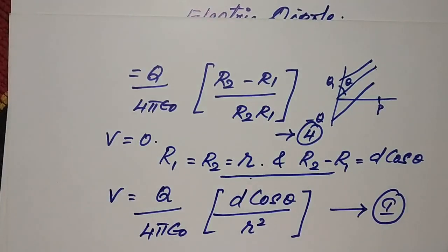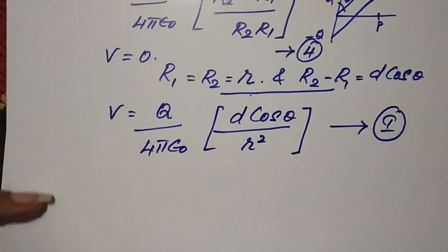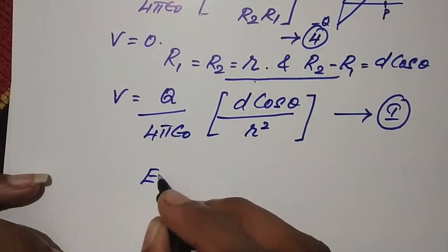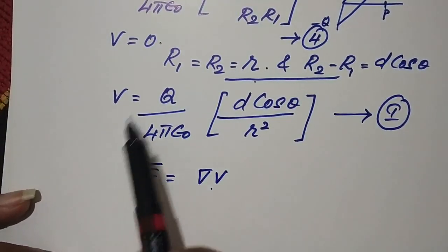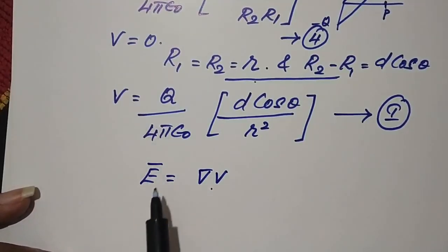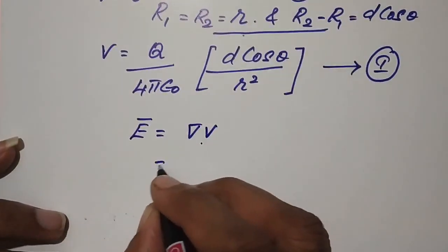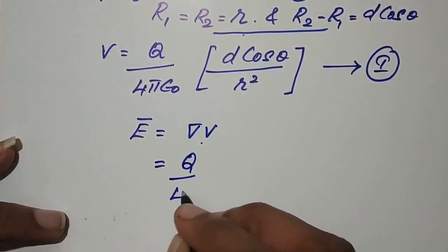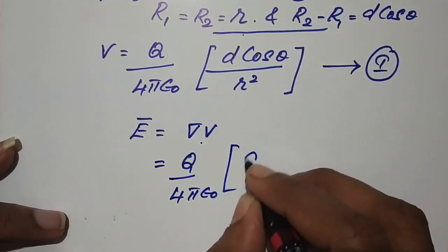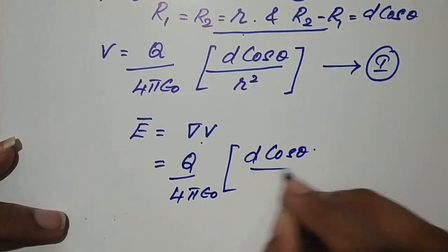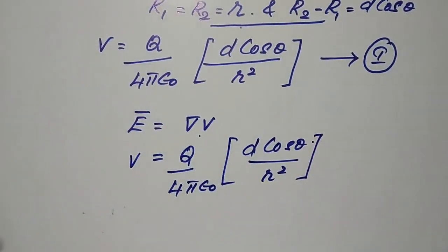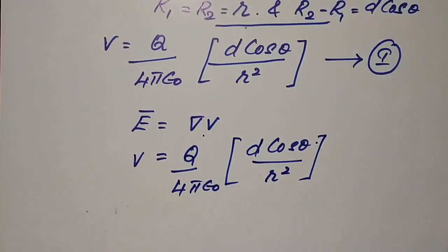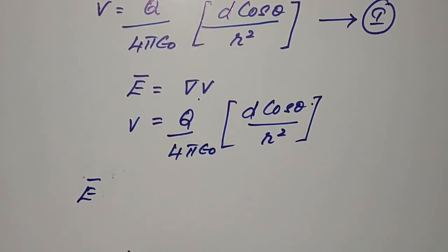As we saw in the previous lecture, E is nothing but the potential drop due to the gradient, that is E = -∇V. Since we have found V, we need to find the E vector with respect to V. We substitute V = q·d·cosθ / (4πε₀·r²) into this equation.